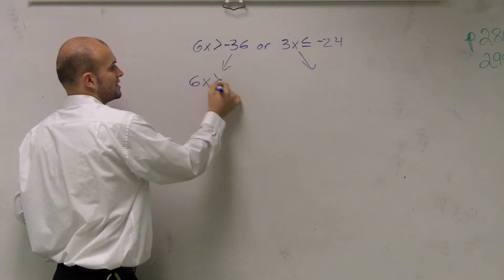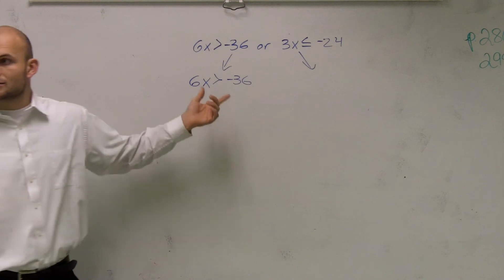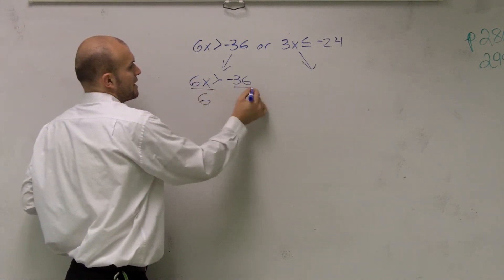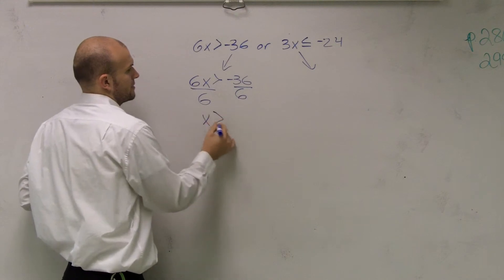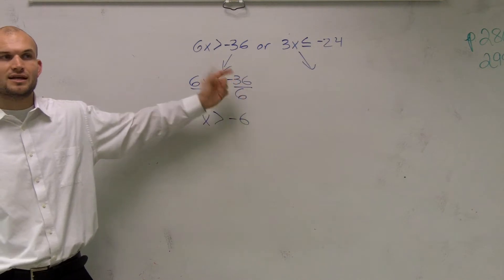I have 6x is greater than negative 36. Remember, the first thing you want to do is solve for x. Since my variable is being multiplied by 6, to undo multiplication, I divide by 6. Now, a big mistake is students will flip the sign because they say the 36 is negative.